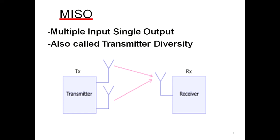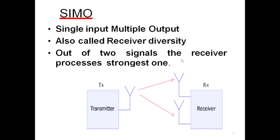Wherever we have multiplication of antennas, that produces diversity. When the transmitter antenna count is multiple, it is called transmitter diversity. When the receiver antenna has multiple components, it is called receiver diversity.